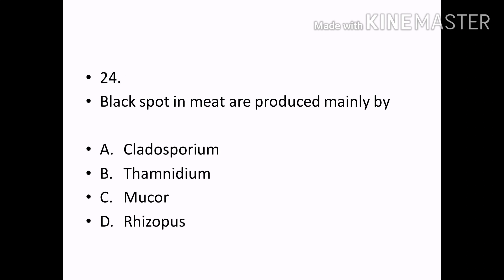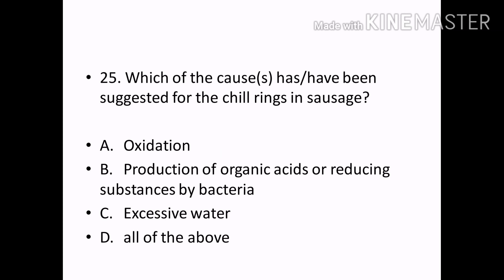Black spot in meat are produced mainly by: Options — Pseudomonas acromobacter, Cladosporium, Thaminidium, Mucor, Reservus. Correct answer: Option A — Pseudomonas acromobacter.